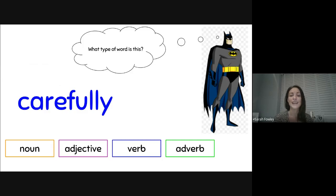What type of word is this? Carefully. Hmm. Carefully. There's a little clue at the end of my word that might help me remember if I'm unsure. Carefully is an adverb. Brilliant. It describes a verb. I opened the door carefully. I jumped carefully.